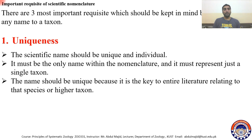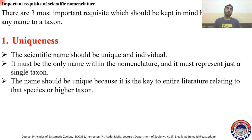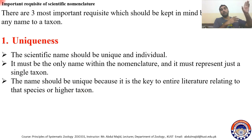When you look up Canis familiaris, it leads you: Canis familiaris → Canidae → Carnivora → Mammalia → Vertebrata → Chordata → Animalia → Eukaryota. So it is actually a key to the entire literature from species to higher taxon, even to Eukaryota. It will cause confusion if the name is not unique.